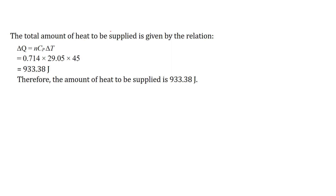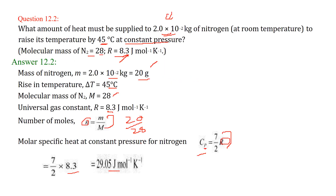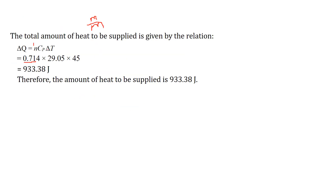The total amount of heat to be supplied is delta Q equals N × Cp × delta T. N is small m by capital M, which is 0.714. Cp is 29.05 and delta T is 45. The amount of heat to be supplied comes out to 933.38 Joules.